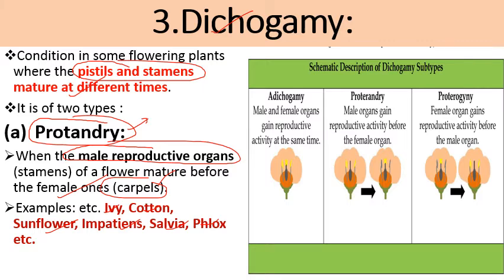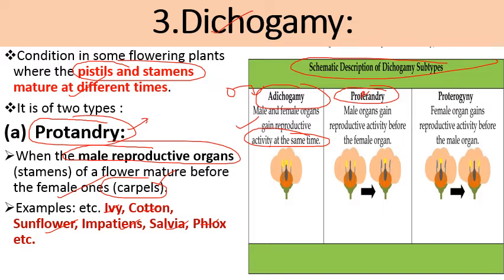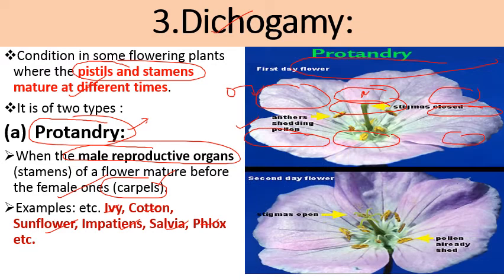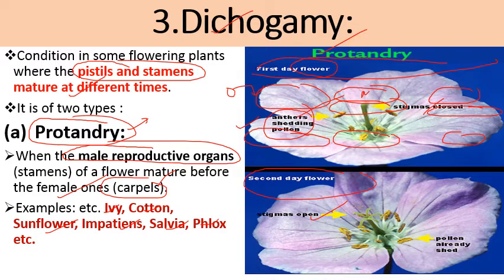In this schematic description of dichogamy subtypes: when male and female organs gain reproductive activity at the same time, this condition favors self pollination. In the protandrous condition the male organs gain maturity before the female organs. Here on the first day the anthers are shedding pollen, and on the second day the stigma opens up — this ensures the process of cross pollination.